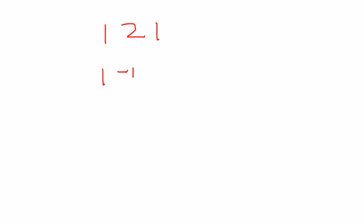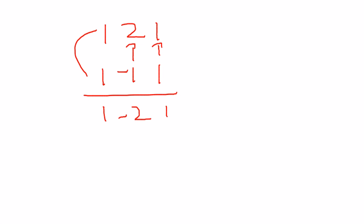Suppose the number is 121. The pattern is 1, minus 1, 1. Multiplying: 1 times 1 gives 1, minus 1 times 2 gives minus 2, and 1 times 1 gives 1 again. So 1 plus 1 is 2, and 2 minus 2 is 0. When we get 0 or any multiple of 11, we conclude that the number is perfectly divisible by 11. So 121 is perfectly divisible by 11.